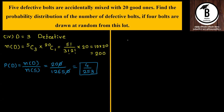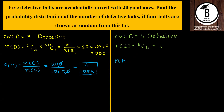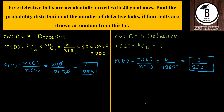When all 4 bolts are defective — this is the last case E = 4 defective. Number of E = 5C4. Since nC(n-1) = n, 5C4 = 5. Probability of E = 5 / 12650. Dividing both by 5 gives 1 upon 2530.